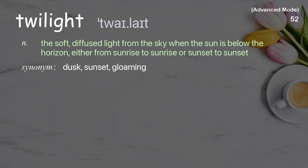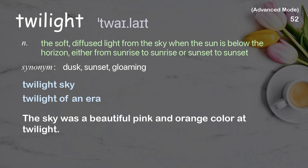Twilight: the soft, diffused light from the sky when the sun is below the horizon, either from sunrise or sunset. Examples: twilight sky, twilight of an era. The sky was a beautiful pink and orange color at twilight.